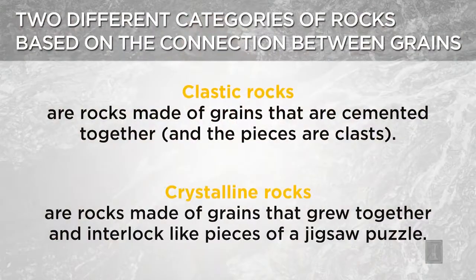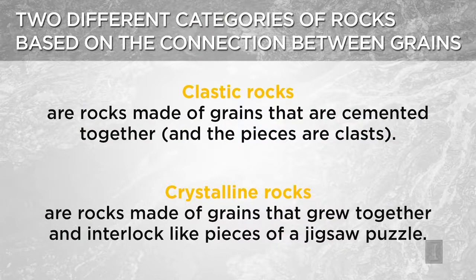So most rocks can be considered to be aggregates of mineral grains or mineral crystals. We distinguish between two overall categories of rocks based on the way in which the grains are stuck together. Rocks in which the grains are separate pieces that are cemented together are called clastic rocks, and those grains are referred to as clasts. Rocks in which the grains intergrow together — effectively locking together like pieces of a jigsaw puzzle — are called crystalline rocks. So, to a first approximation, we can divide rocks into clastic rocks or crystalline rocks.